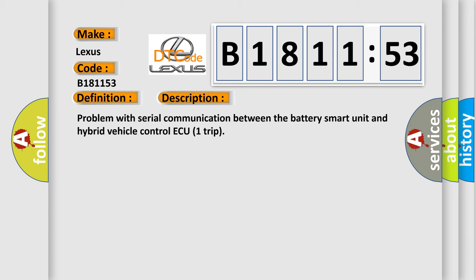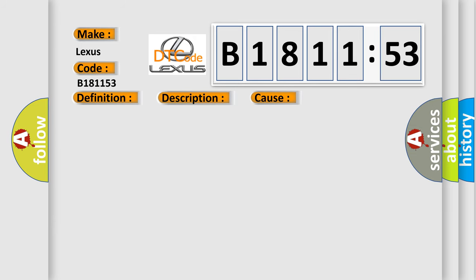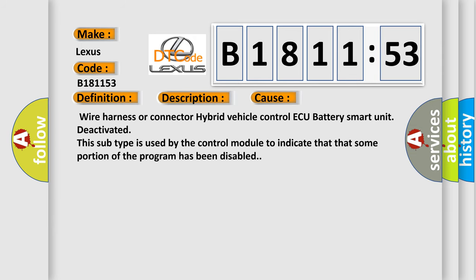And now this is a short description of this DTC code: problem with serial communication between the battery smart unit and hybrid vehicle control ECU trip. This diagnostic error occurs most often in these cases.